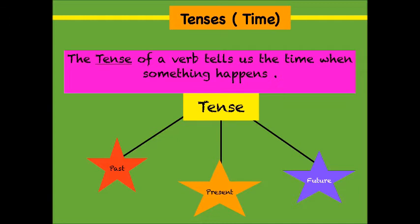Past tense tells us that the action took place — it was yesterday. For example, I worked. Next, present tense tells us that the action is happening now — it is today. For example, I am working, or I work. And the future tense tells us that the action will take place — it is tomorrow. For example, I will work.